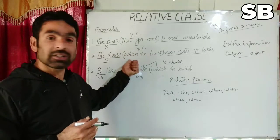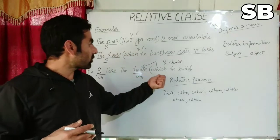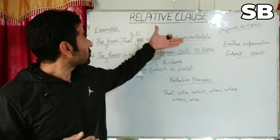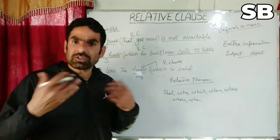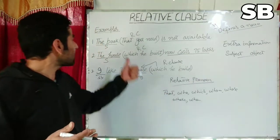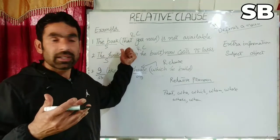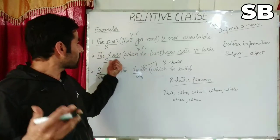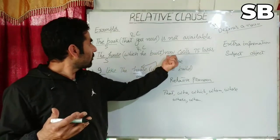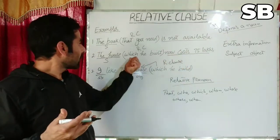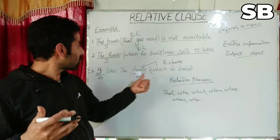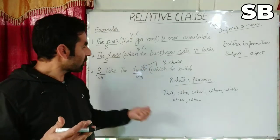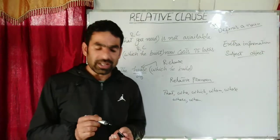For example, in the first sentence the relative clause starts with 'that'; in the second sentence it starts with 'which'; in the third sentence it also starts with 'which.' You can try these relative pronouns in your own sentences. A relative clause is a clause which gives us extra information about the subject or object, or we can say it defines a noun — like 'which house costs 75 lakhs? The one which he built.' Hope you have understood the lesson, thanks.